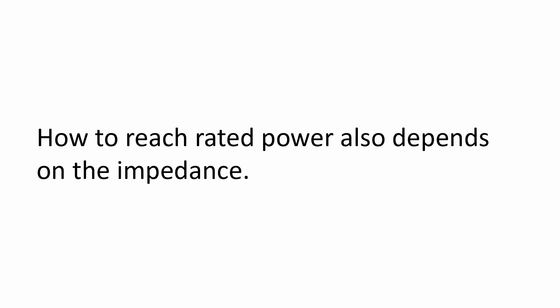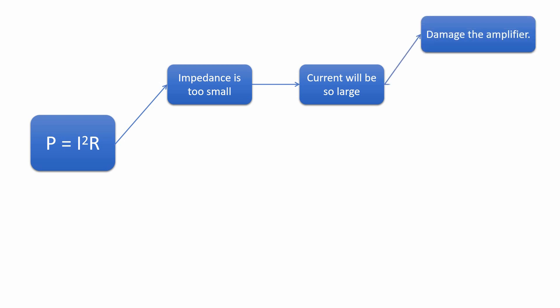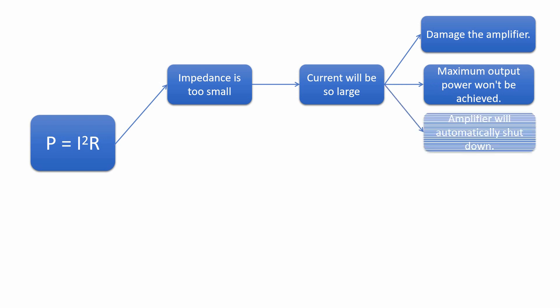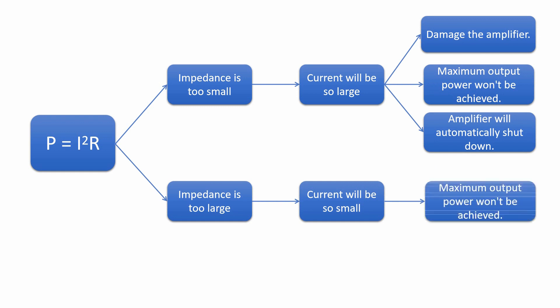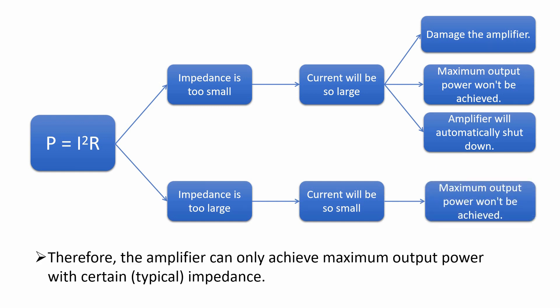Whether the amplifier can reach rated power also depends on the impedance. If the impedance is too small, since P equals I²R, the current will be so large, exceeding the tolerance of the components, resulting in the amplifier being damaged. In addition, amplifiers designed by Shure Electronics are equipped with overcurrent protection. When the current reaches its limitation, the amplifier will automatically shut down to prevent it from being burned. If the impedance is too large, the current will become smaller, resulting in lower output power. Therefore, the amplifier can only achieve rated output power with certain typical impedance.